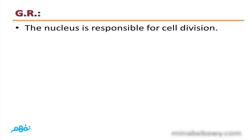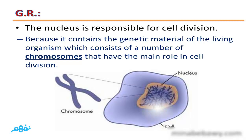Give reason: The nucleus is responsible for cell division. This is because the nucleus contains the genetic material of the living organism, which consists of a number of chromosomes that have the main role in cell division. So the nucleus is responsible for cell division because it contains chromosomes.